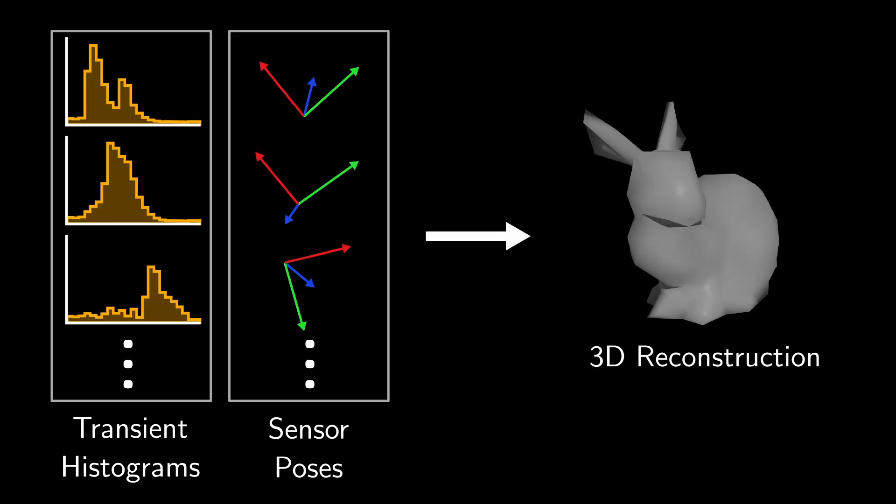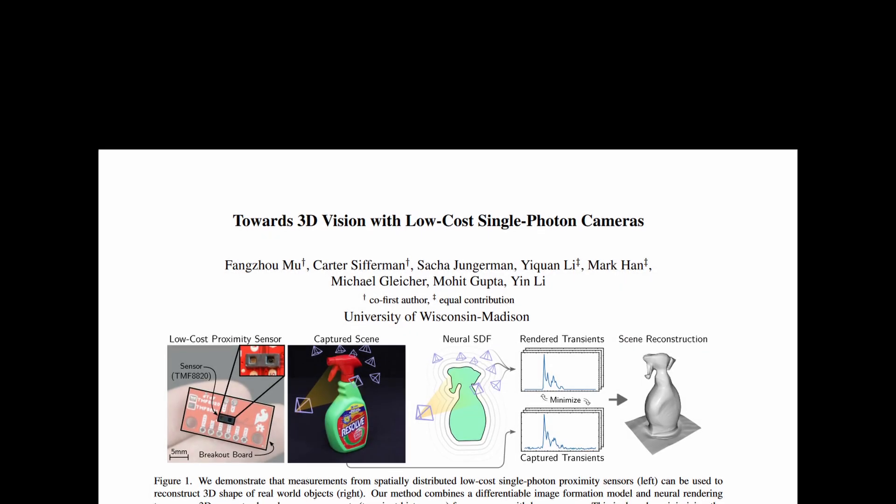Ideally, we could utilize the entirety of the information in these transient histograms to reconstruct the scene. Solving this problem is the topic of our paper, Towards 3D Vision with Low-Cost Single-Photon Cameras, which has been published at CVPR 2024.